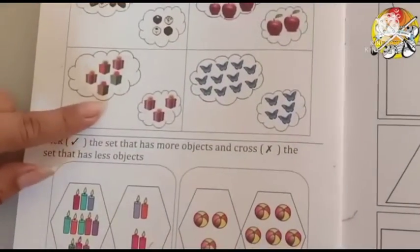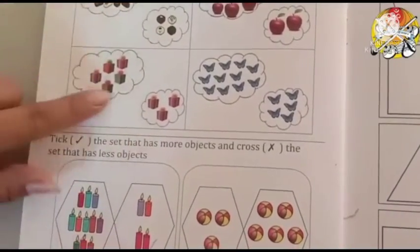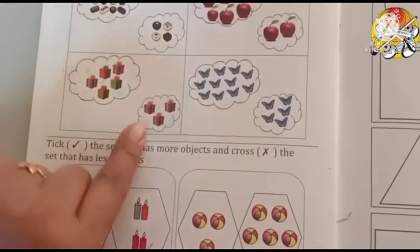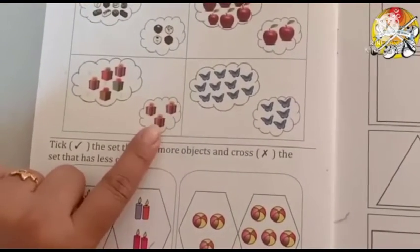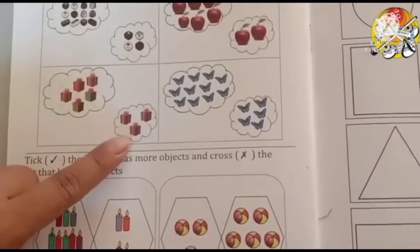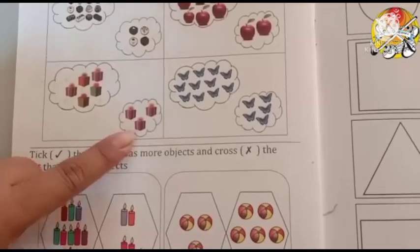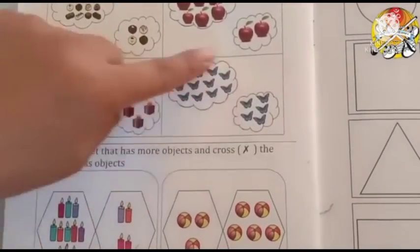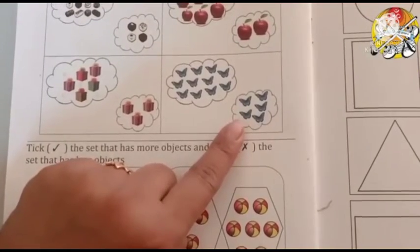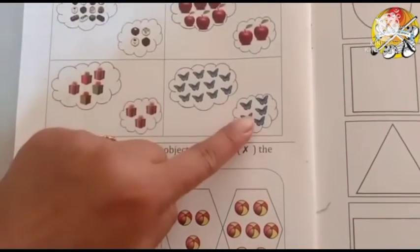See kids, in this box, in this cloud, so many gift boxes are there. And here in the small cloud, less gift boxes are there. So this is more and this box is less. In this cloud, more butterflies. And in this cloud, less butterflies. So more, less.